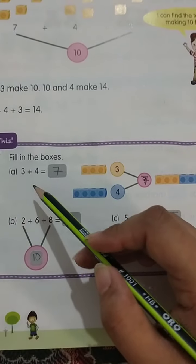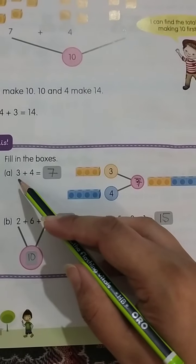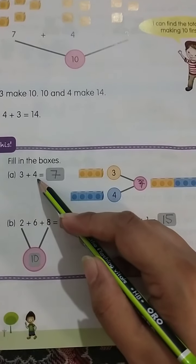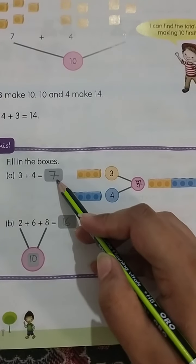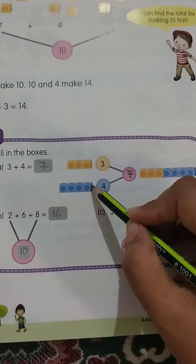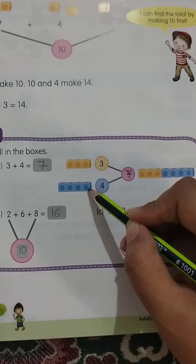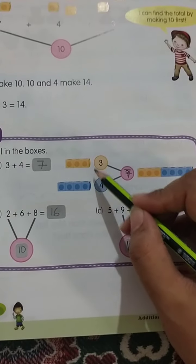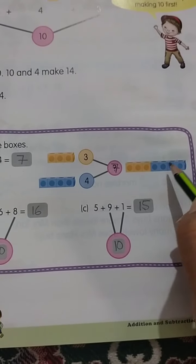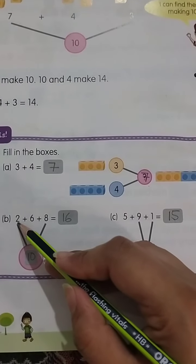Fill in the boxes. You can fill in boxes. Plus, add, addition. 3 plus 4 is equal to 7. Here I am going to show you the example of boxes for help. 3, 1, 2, 3. 4, 1, 2, 3, 4. 3 plus 4 is equal to 1, 2, 3, 4, 5, 6, 7. This way you will be able to fill in this way.